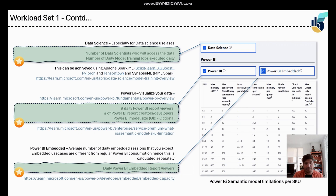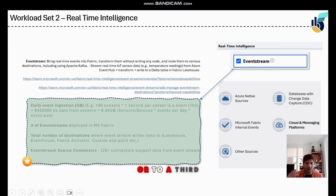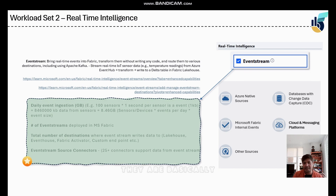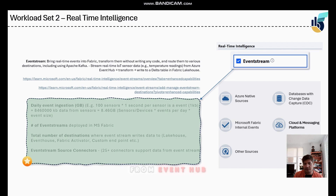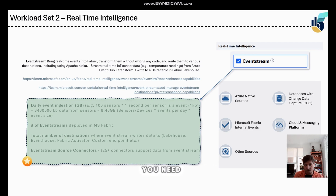The second set of workloads covers Event Streams. Event Streams are real-time events you can bring directly into Fabric without writing any code — such as IoT events or Apache Kafka. A good example is getting data from Event Hub, transforming it, and putting it into a Fabric KQL database. For Event Streams, one of the key questions is the daily event ingestion volume.